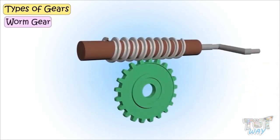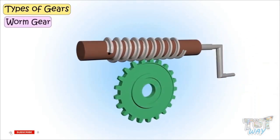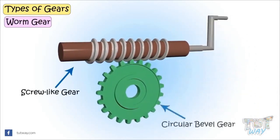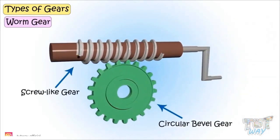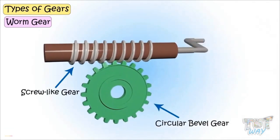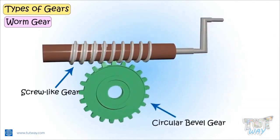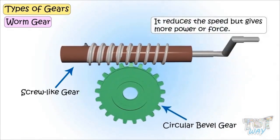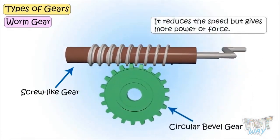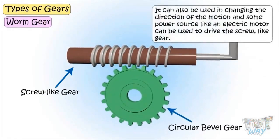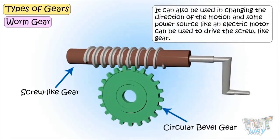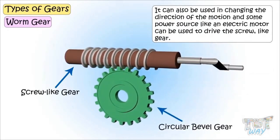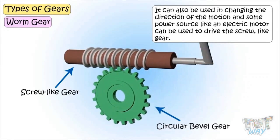Next, we have the worm gear. Here, a screw-like gear drives a big circular gear, and this arrangement is known as a worm gear. It reduces speed but gives more power or force. It can also be used to change the direction of motion. A power source, like a motor, can be used to drive the screw-like gear.